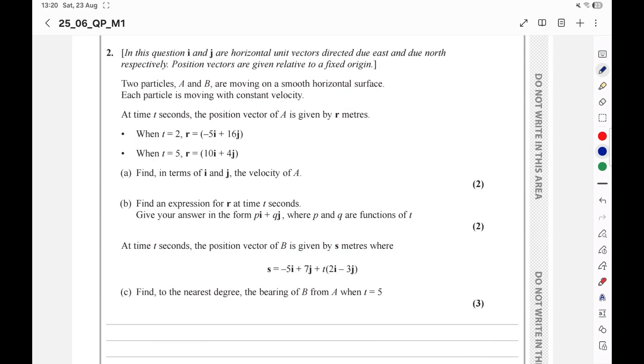Question 2. Vectors. Two particles, A and B, are moving on a smooth horizontal surface. Each particle is moving with constant velocity. Vectors question. Moving with constant velocity? Immediately keep in mind we will use this rule: R equal R node plus Vt. Final position equal initial position plus velocity multiply time, which is the distance.